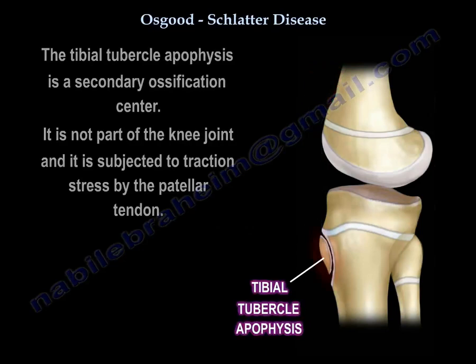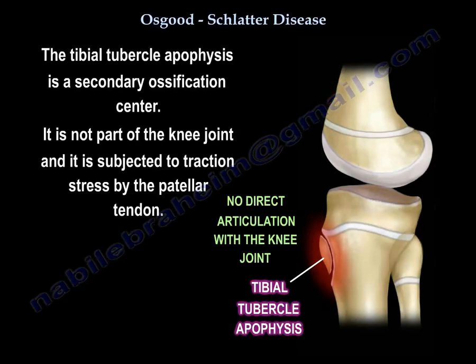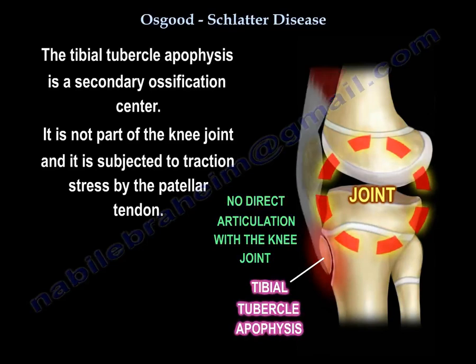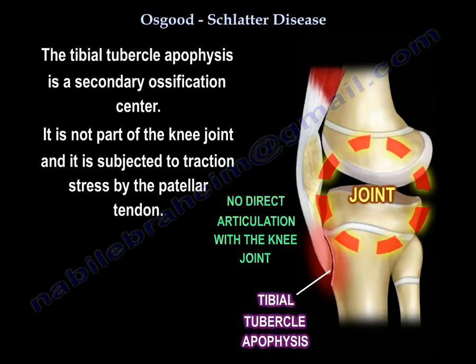The tibial tubercle apophysis is a secondary ossification center. It is not part of the knee joint and it is subjected to traction stress by the patellar tendon.